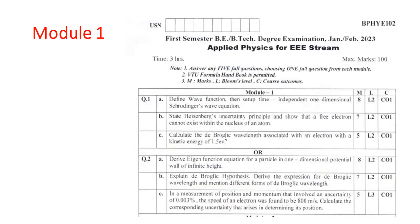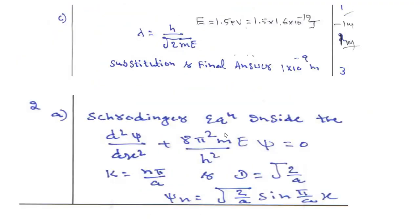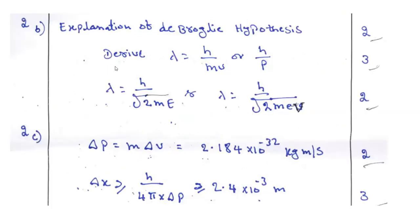Another one is question number 2C. Use the formula. Delta p is equal to m delta v. Change in momentum is equal to m into change in velocity. You can substitute accordingly. You will be getting two marks. You got to apply the condition. If you apply the condition, position greater than or equal to h by 4 by delta p. It should be 2.4 into 10 to the power minus 3.